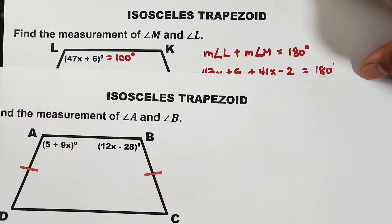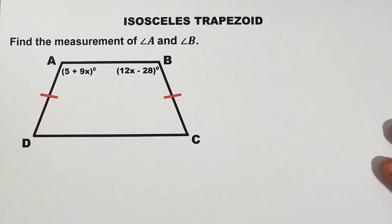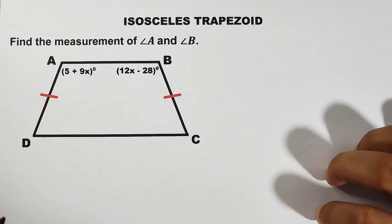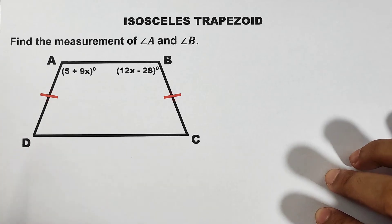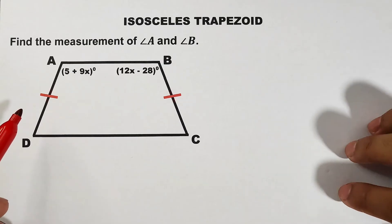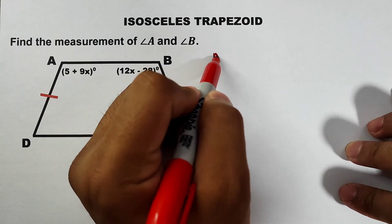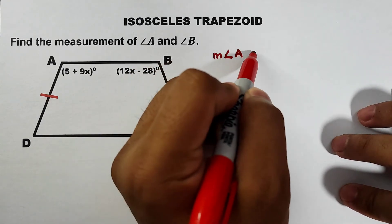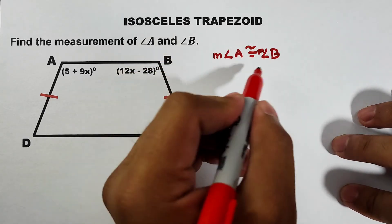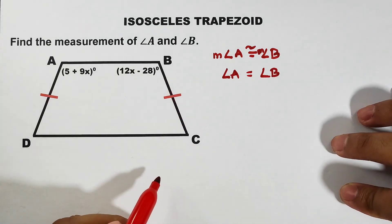For another problem — our next problem is also about angles. Find the measurement of angle A and angle B. Angle A and angle B are the base angles of the upper base. It is a property that states the base angles are congruent, meaning the measurement of angle A is congruent to the measurement of angle B. So we can say angle A equals angle B because they are base angles.